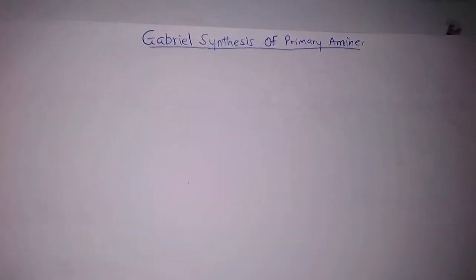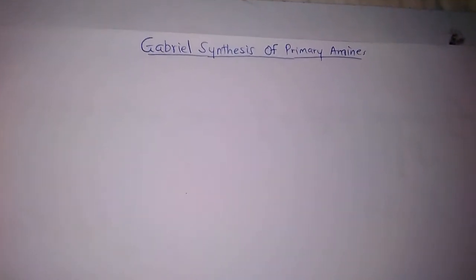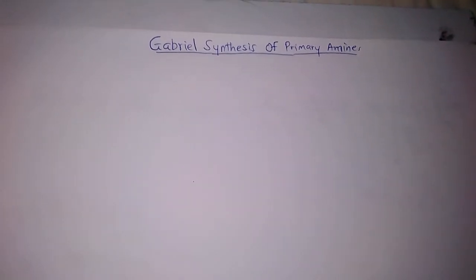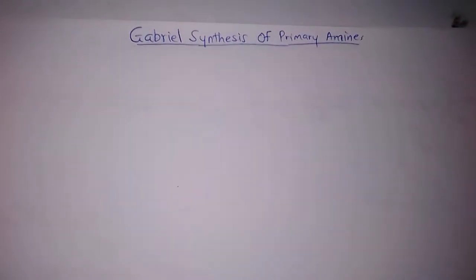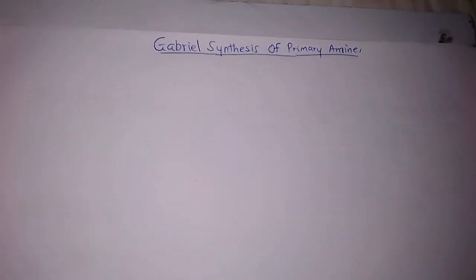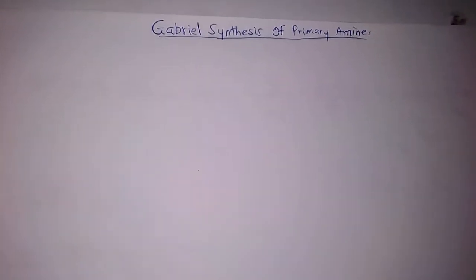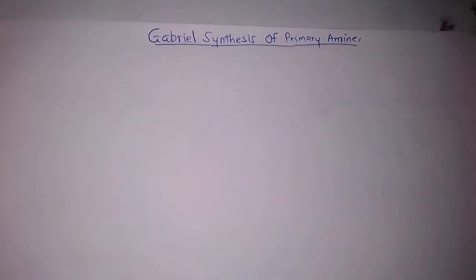Gabriel synthesis involves the reaction between ethylamide and potassium hydroxide to generate a potassium phthalamide. The potassium phthalamide, which is very reactive, reacts with any alkyl halide to produce an N-alkyl phthalamide, and the N-alkyl phthalamide undergoes a reaction with hydrazine in an organic solvent to release the resulting alkyl amine as a primary amine along with other byproducts.